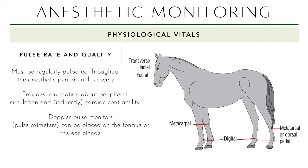Doppler pulse monitors and pulse oximeters — the clips we put on the tongue or ear pinnae — are also applicable for large animals. In horses, you can place them on the ear pinnae, tongue, nasal septum, or non-pigmented lips. The distance between the lip and gums is quite large, so you can also check mucous membrane color there.